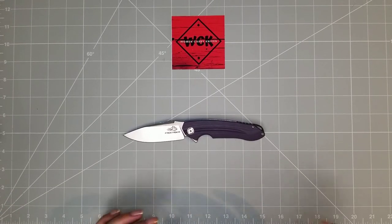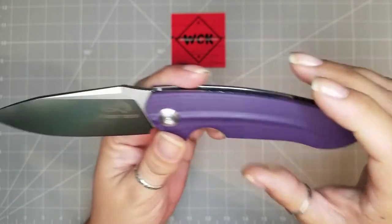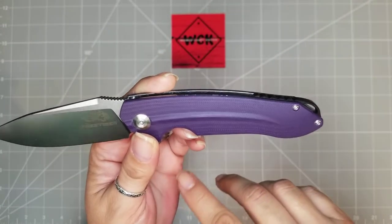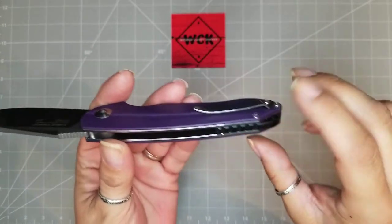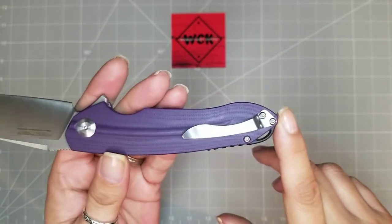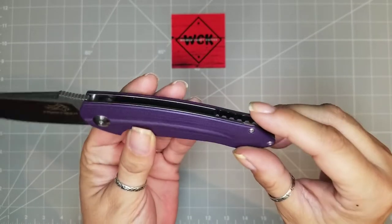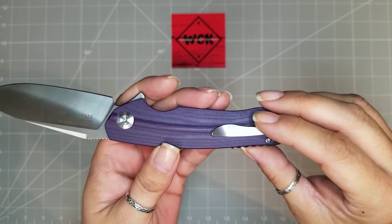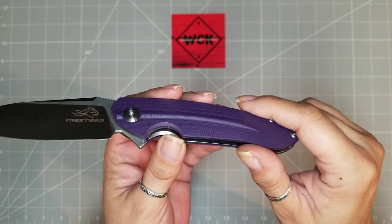Okay, so let's get into this. We have these gorgeous G10 handles in purple. Love it. Absolutely love it. You have a G10 backspacer, a stainless steel pocket clip. Now, for my lefty friends, it is a right-hand tip-up pocket clip carry only.